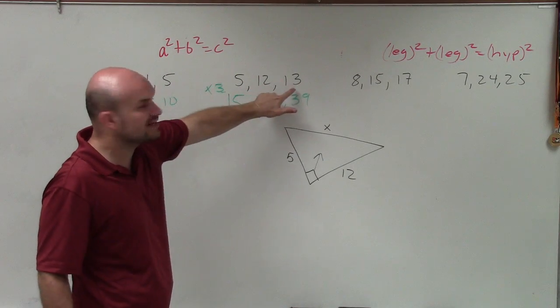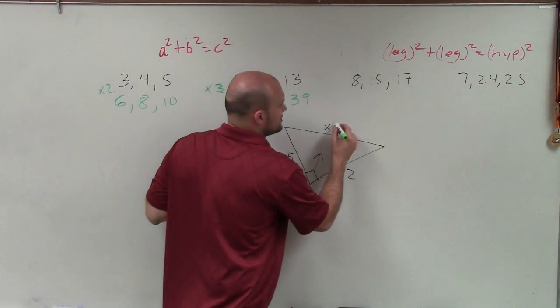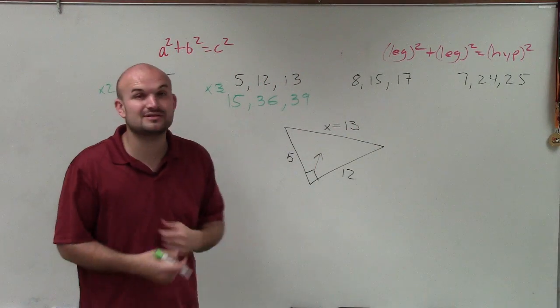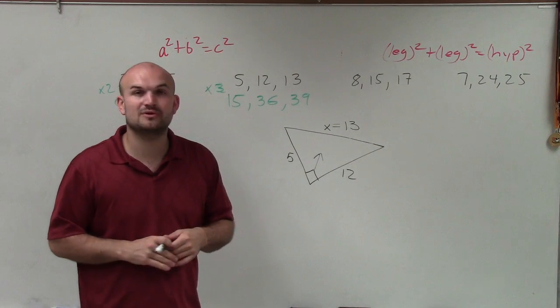5 squared plus 12 squared is going to equal 13 squared. Therefore, the value of my hypotenuse, in this case, I'll just use the Pythagorean triple, equals 13.